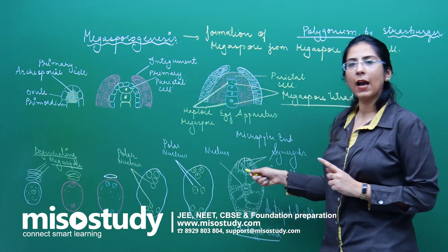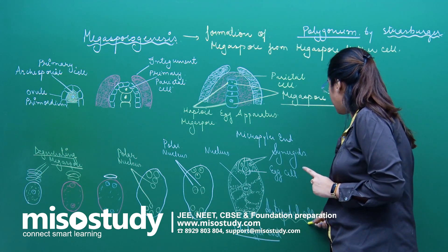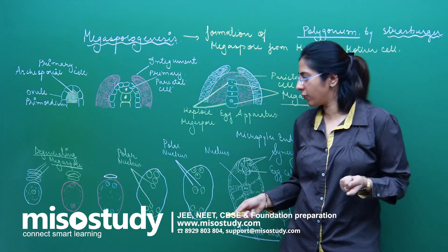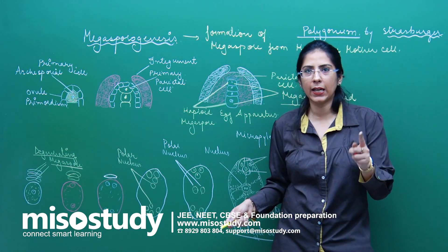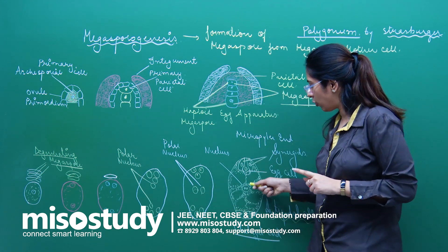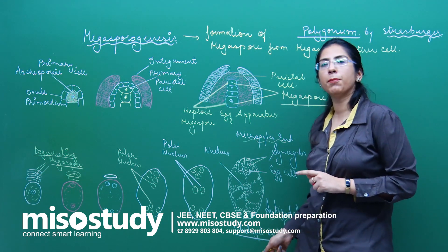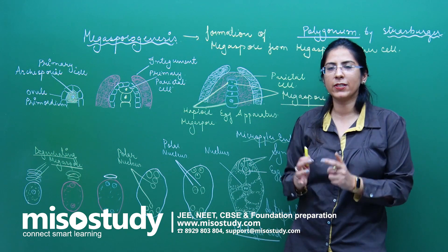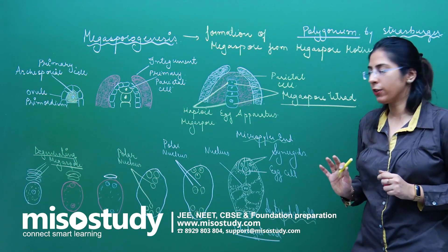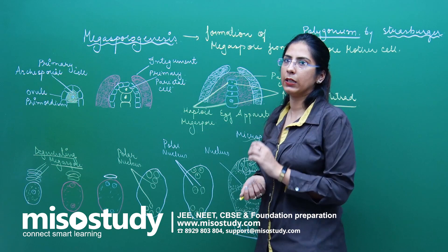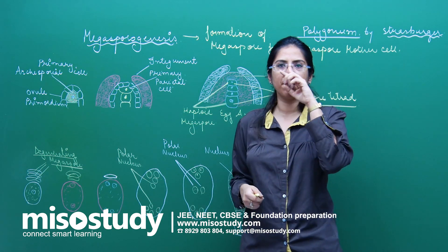So at the Micropylar end: one egg cell and two synergids. In the center: the polar nuclei forming the central cell with dense cytoplasm. At the Chalazal end there are three antipodal cells. The eight nuclei are arranged as three at the Micropylar end, three at the Chalazal end, and two in the central position. This is how embryo sac formation occurs and the whole process of Megasporogenesis.